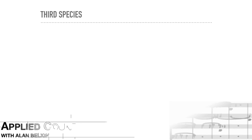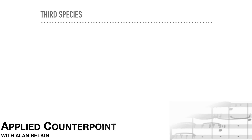Third species requires thinking ahead. You must at the very least decide the note on the next downbeat in order to choose a route to get there. A good line requires planning further ahead. We'll come back to this in a moment.